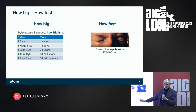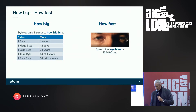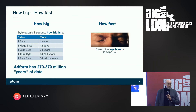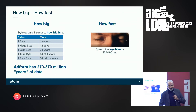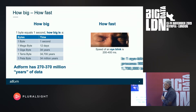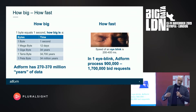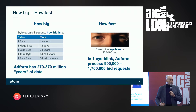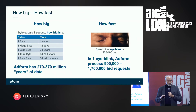Let's talk about latency. A blink of the human eye is about 200 to 400 milliseconds. At my company, Adform, we have between 270 to 370 million years of data, depending on the time of year and day. And every time you blink your eye, we receive between 900,000 and 1.8 million bid requests. So in a second, we do about 7 million of them. This gives you an idea of how to describe latency, throughput, and scale.